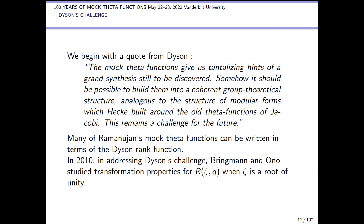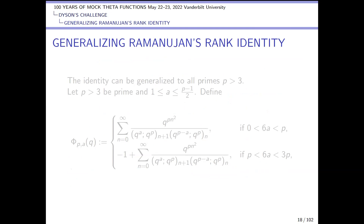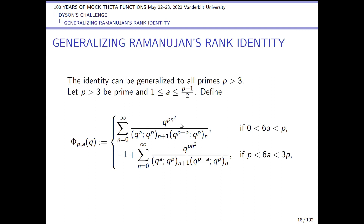In 2010, addressing Dyson's challenge, Bringmann and Ono studied transformation properties of the rank function when z equals a root of unity. Now I'm going to talk about how that identity in Ramanujan's lost notebook can be generalized. Remembering that the identity involved phi and psi functions, the generalization for primes bigger than 3 depends on how large a is, which is a bit funny.